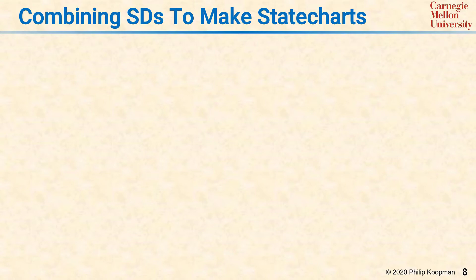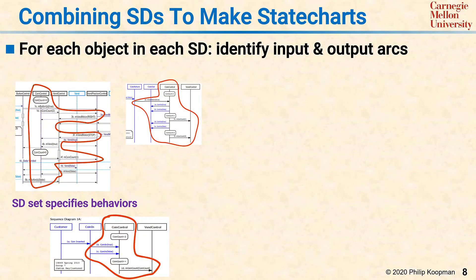Typically, there's a huge pile of sequence diagrams for a system. Figuratively speaking, spread them all out on the floor so you can see all of them. Then decide which object you're interested in. Pick an object, and for every sequence diagram in the system, first find the sequence diagrams that actually have that object.